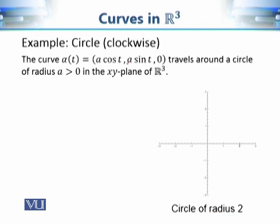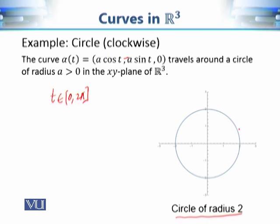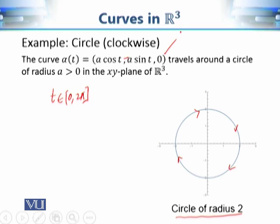Now consider another function (a cos t, −a sin t, 0), again with t from 0 to 2π. When we sketch the geometry represented by this function, it once again gives a circle of radius a — in the graph, a circle of radius 2. So the geometry of both functions is the same, but the only difference is the direction of traversal. The question is: if the geometrical shape is the same, is there any relationship between these two different functions?